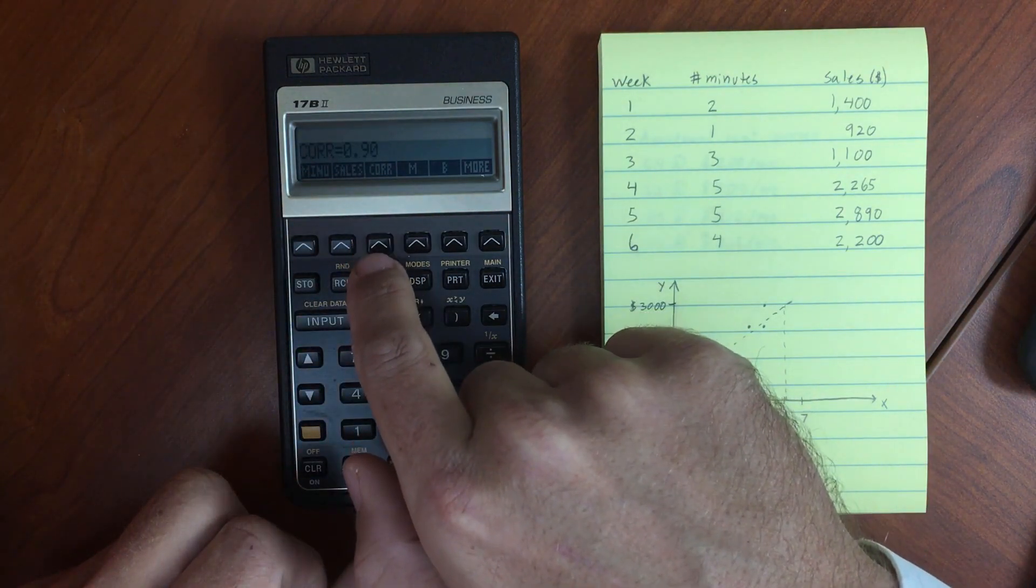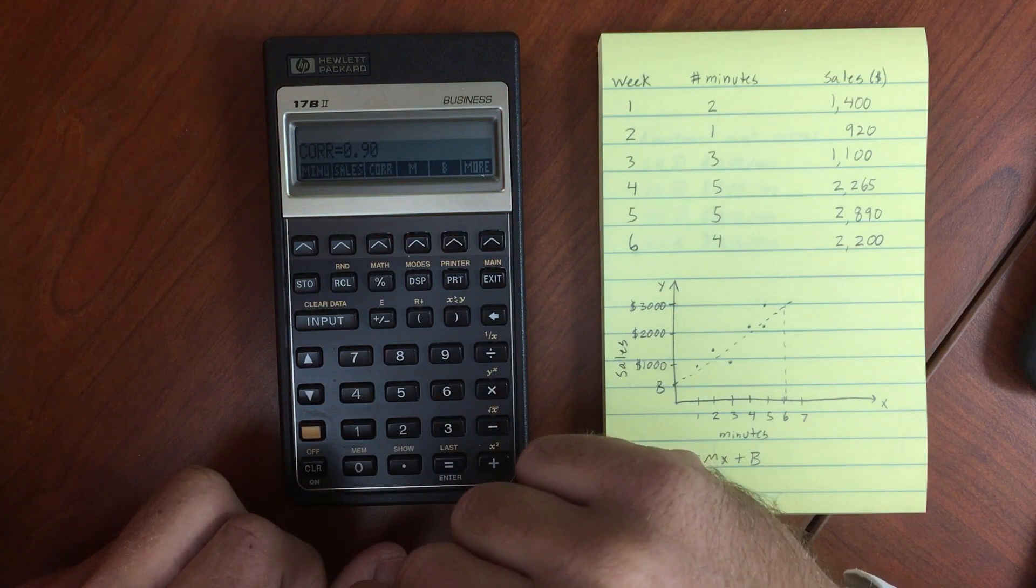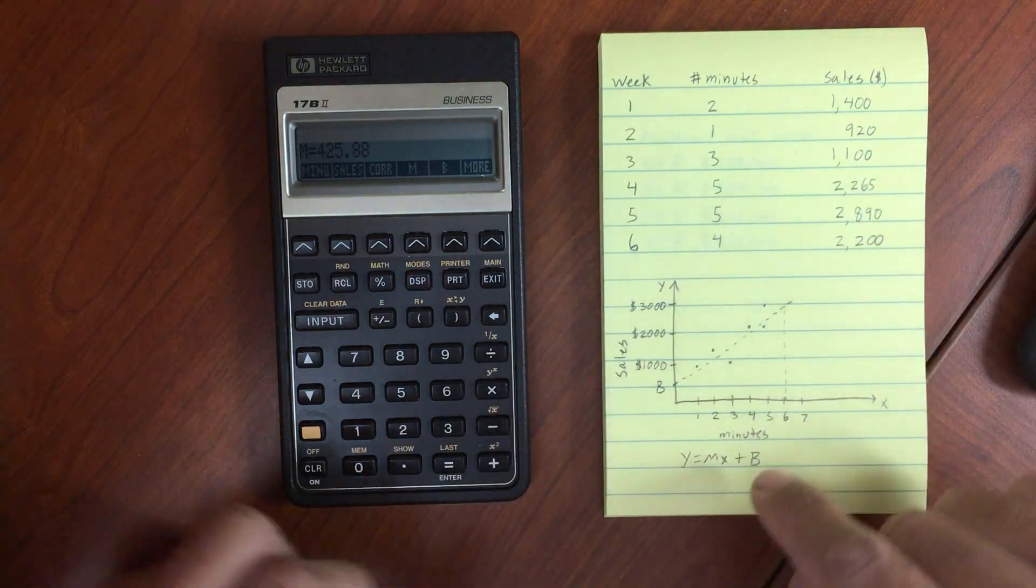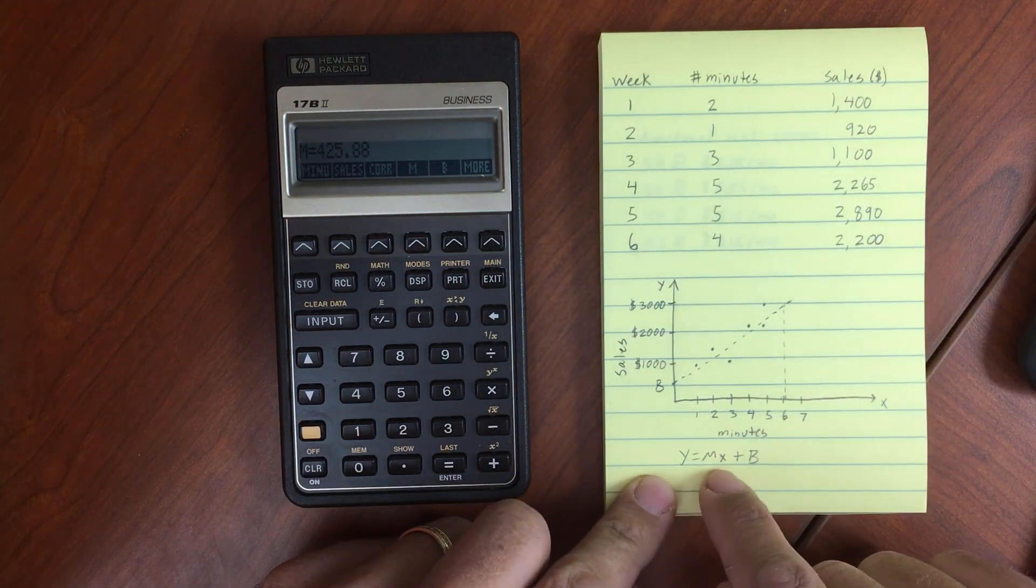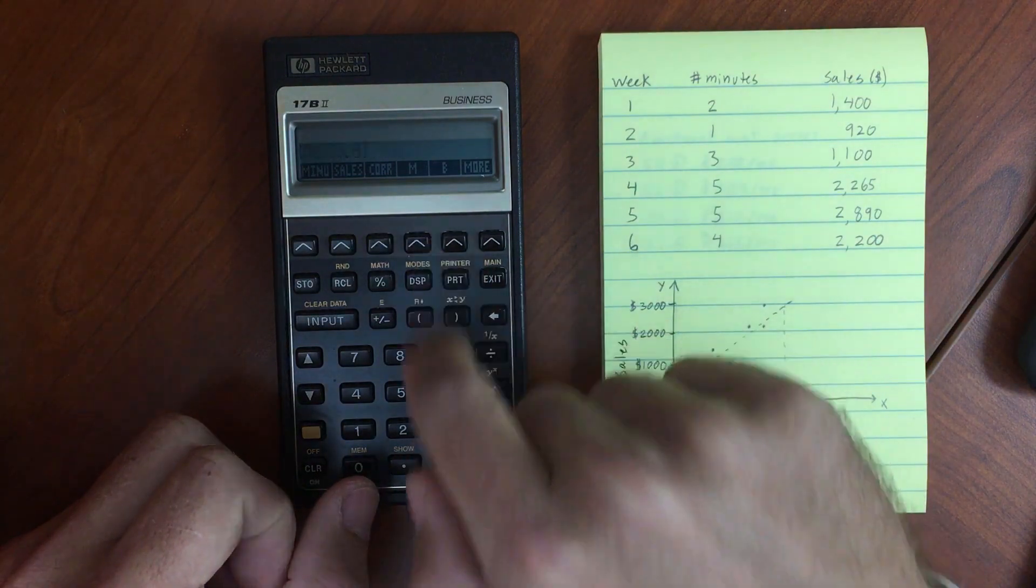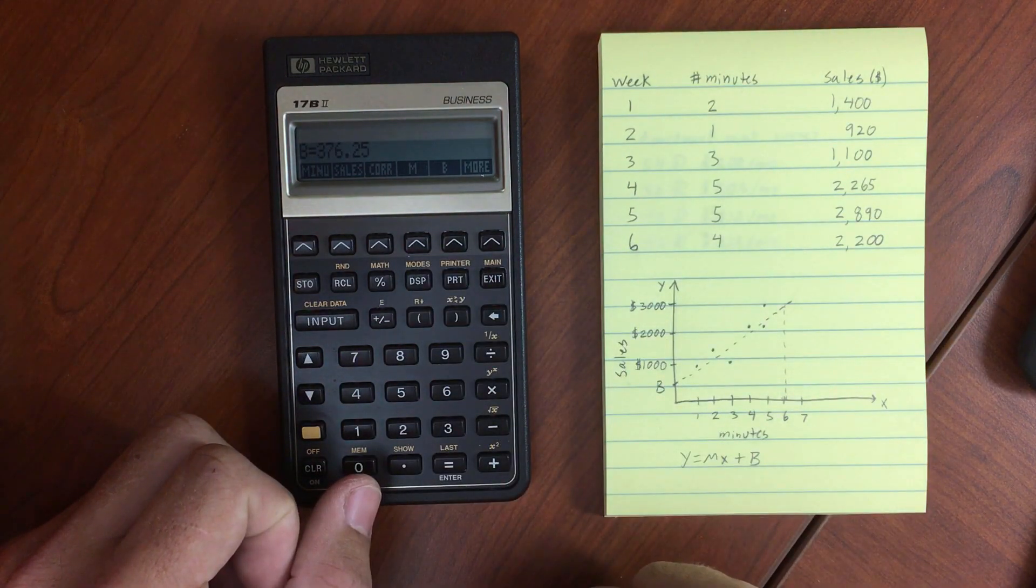Let's look at the correlation on that. Correlation is 0.9. M will give me the slope of that linear line. So that's of the equation y equals mx plus b. So that's our slope. And then b is going to be our y-intercept. So that's 376.25.